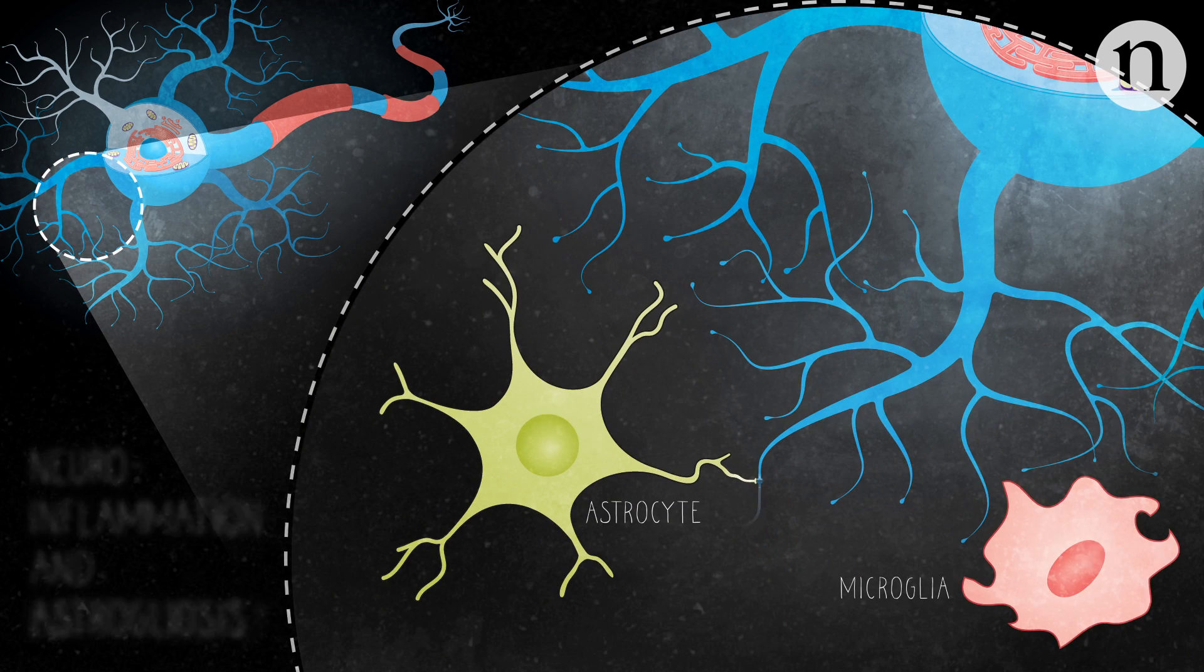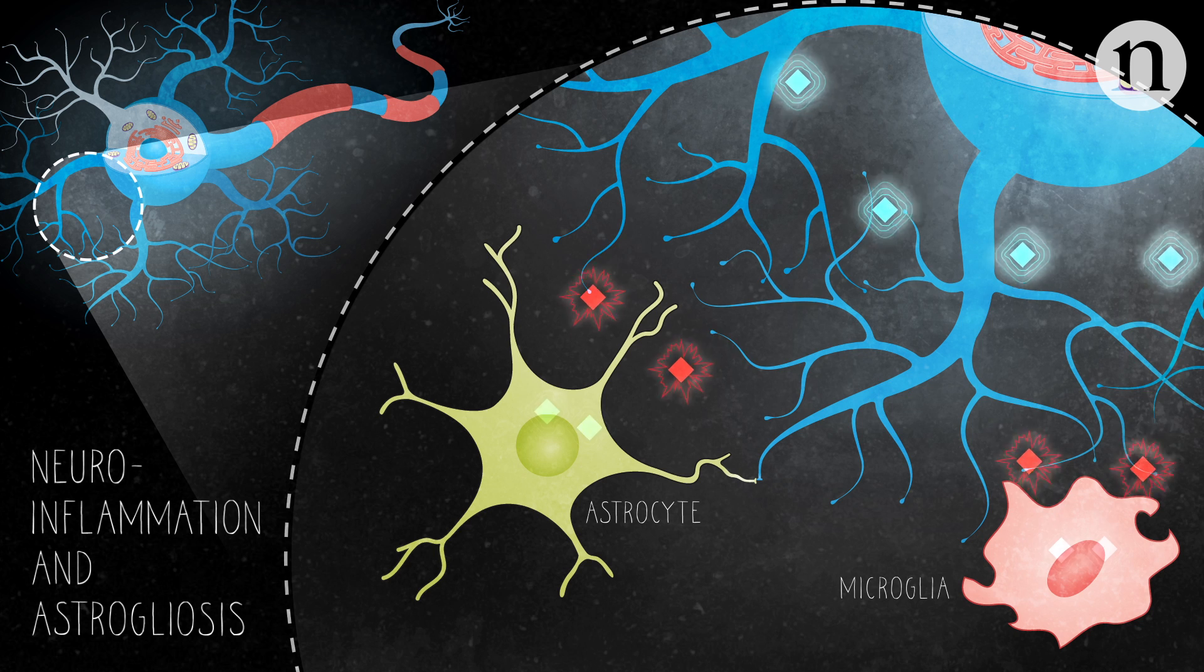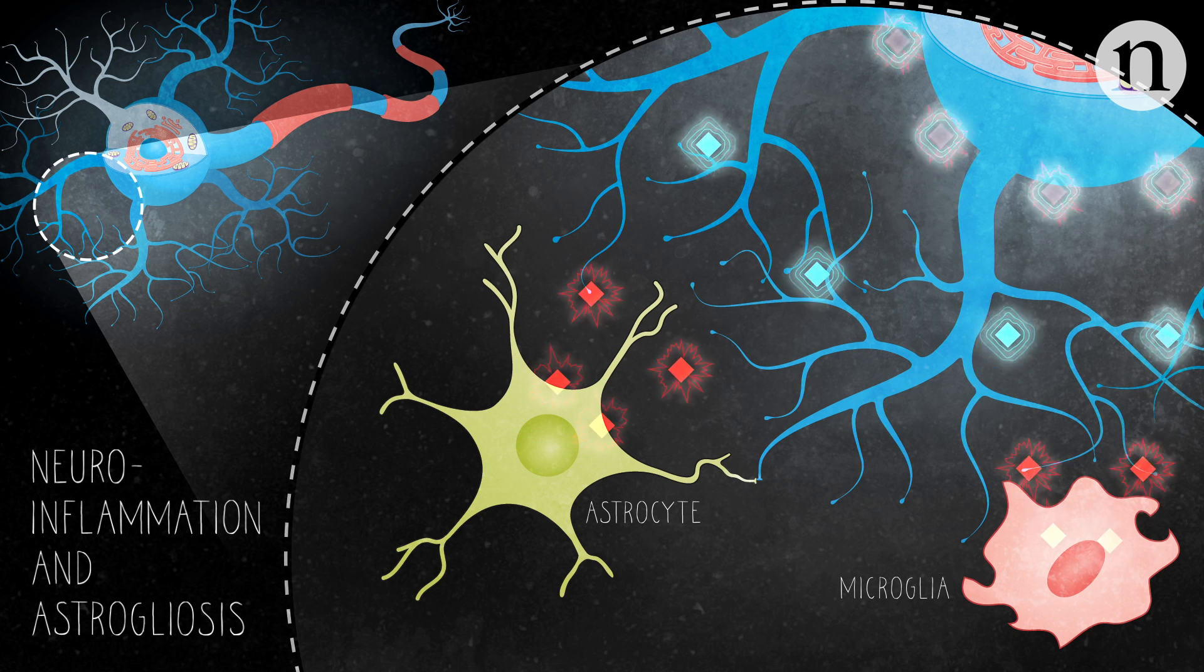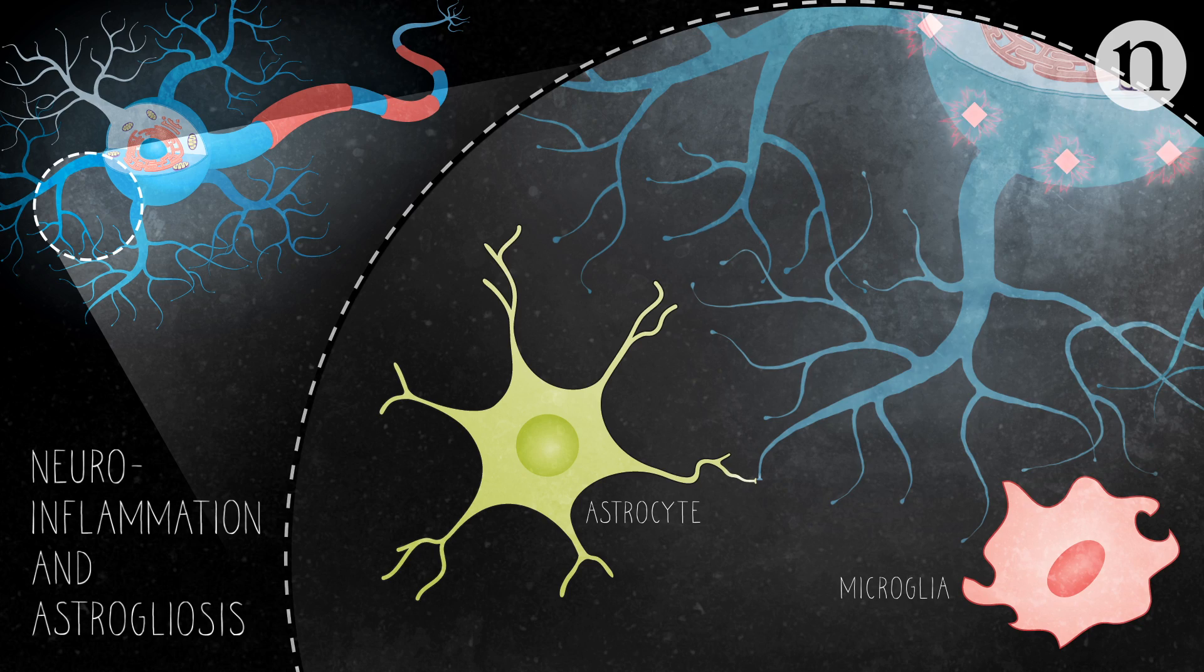Finally, astrocytes and microglia can produce factors that protect or damage motor neurons. Neuronal death occurs when excessive damaging factors are produced.